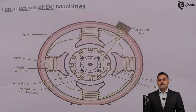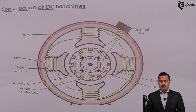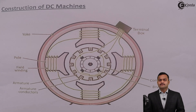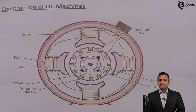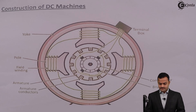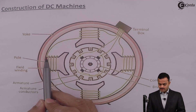Low reluctance saves magnetic power and ultimately electric energy to produce the same amount of flux. Based on this, the yoke is made up of a magnetic material — cast iron or cast steel. That is the function of the yoke. Let's go to the next part: the pole.